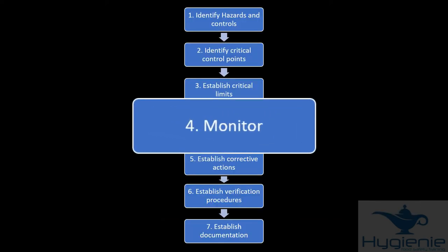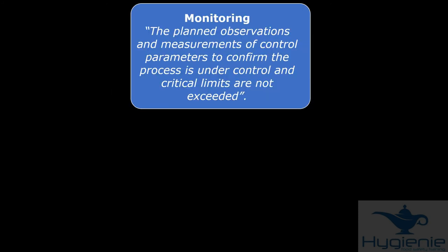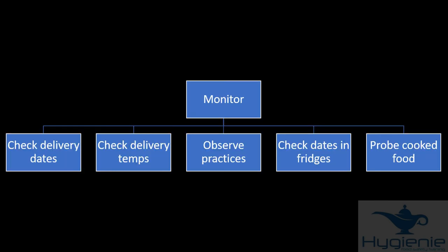Number four, monitoring. The planned observation and measurements to control parameters to confirm the process is under control and critical limits are not exceeded. In other words, it's how we measure. Examples are checking delivery dates, checking delivery temperatures, observing practices, checking dates in fridges and probing food.